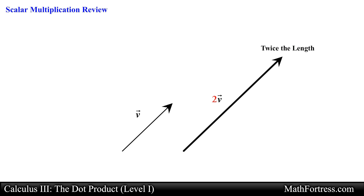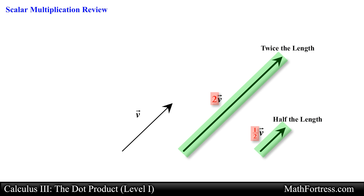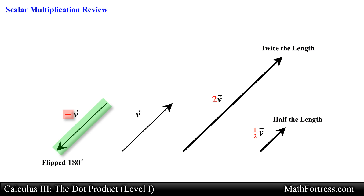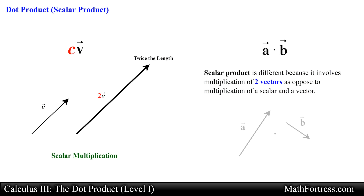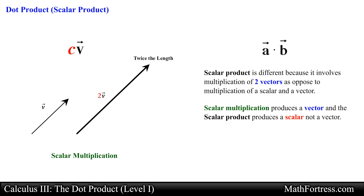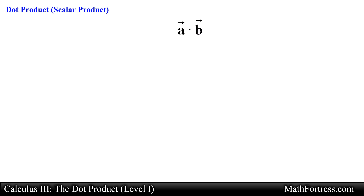In the previous videos we described scalar multiplication as an operation that takes a real number called a scalar and changes the length or magnitude of a vector. If this scalar was negative it would also change the direction of the vector 180 degrees. This operation is denoted as c times vector v. Now the scalar product is different because it involves multiplication of two vectors, as opposed to a scalar and a vector. The key difference is that scalar multiplication produces a vector, while the scalar product produces a scalar — not a vector.